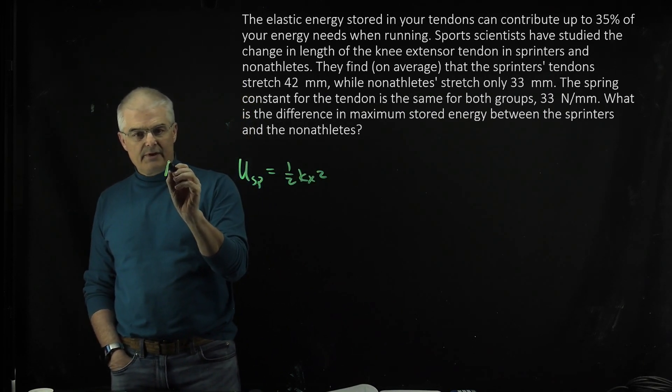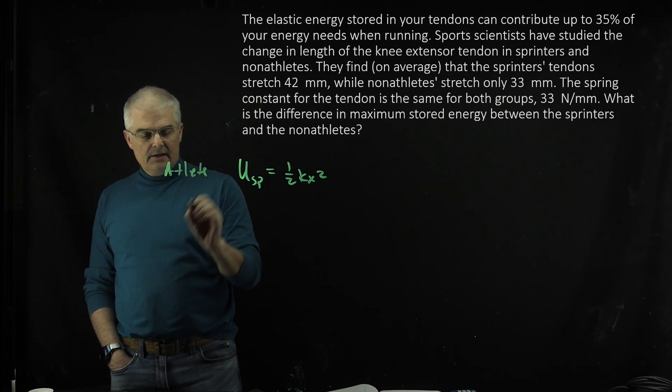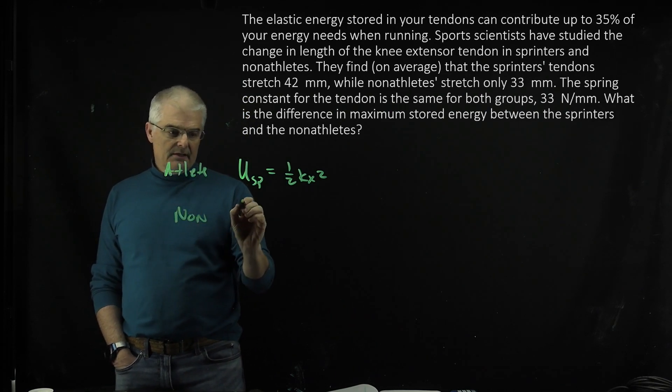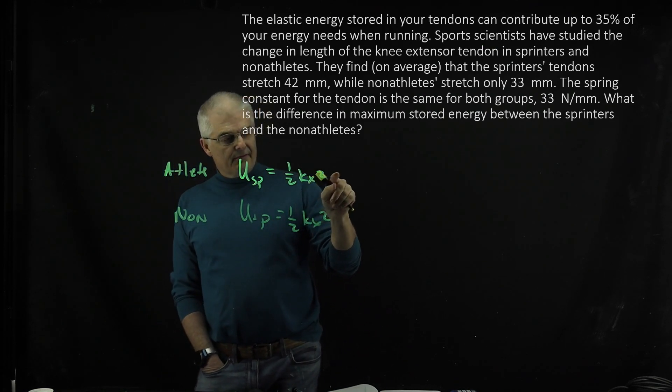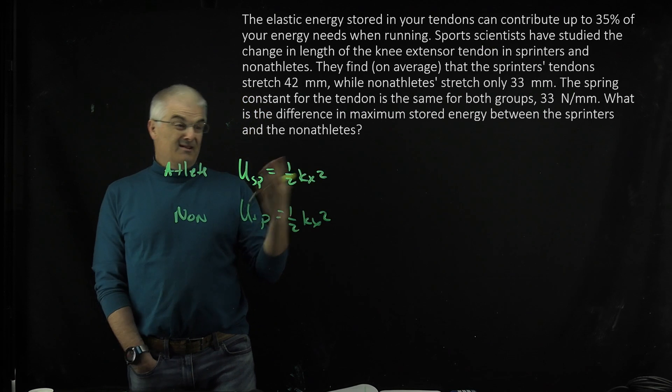So you've got one for the athlete and one for the non-athlete. You're going to do this equals 1/2 kx squared, and then you're going to find each of them and then subtract.